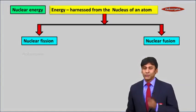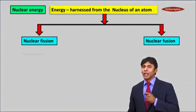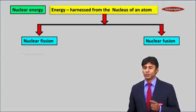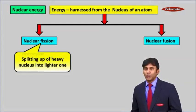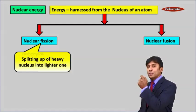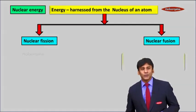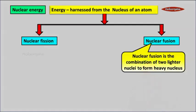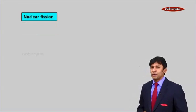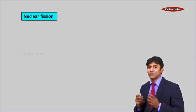This can be harnessed in two ways: nuclear fission and nuclear fusion. Splitting up of a heavy nucleus into lighter ones is called nuclear fission. Nuclear fusion is the combination of two lighter nuclei to form a heavy nucleus. In short, fission is splitting and fusion is combination.